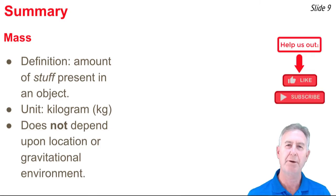Okay, let's summarize. Mass is the amount of stuff present in the object. The unit of measurement would be the kilogram, abbreviated kg. And mass is a location-independent quantity. It doesn't depend upon the gravitational environment.